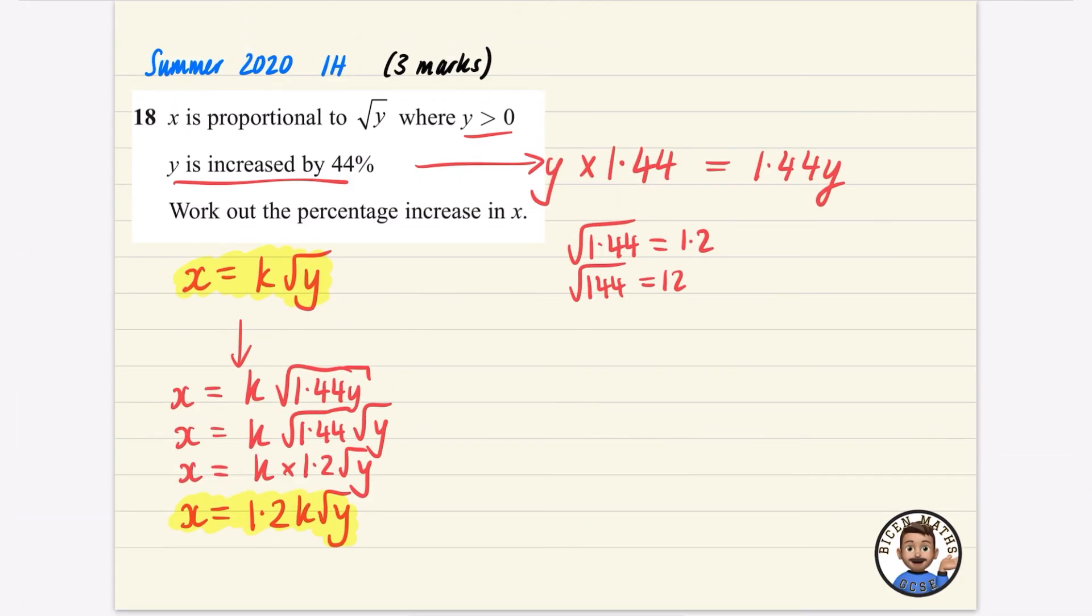So this is saying that X is what it was originally, K root Y, but it's been multiplied by 1.2. So as X has been multiplied by 1.2, hopefully you can recognize what this means.